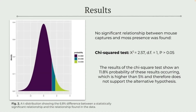After running the chi-square test, I found no significant relationship between mouse captures and moss presence at the trapping sites. The results show that there was an 11.8% probability that these results would occur when doing this study, which unfortunately is higher than the 5% threshold needed to support the alternative hypothesis.